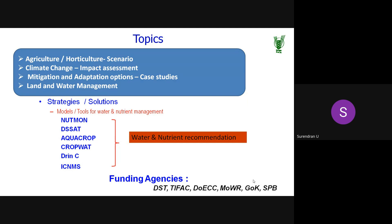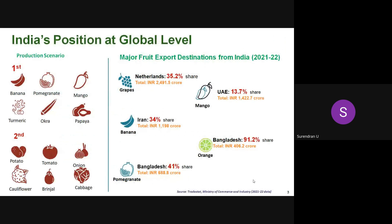A few decision support systems include NatMon for nutrient monitoring, V-SAT, AquaCrop, CropWard, RINCEY, and ICNMS. Within one hour it will be difficult to cover everything, but interested participants can stay in touch with us. This work is mostly funded by DST, the Department of Environment and Climate Change, and the Ministry of Water Resources.